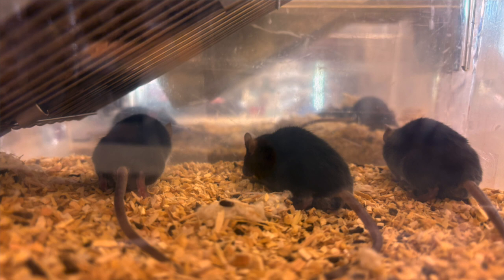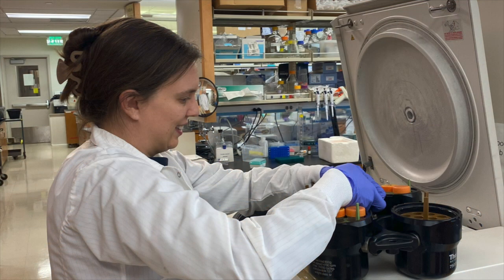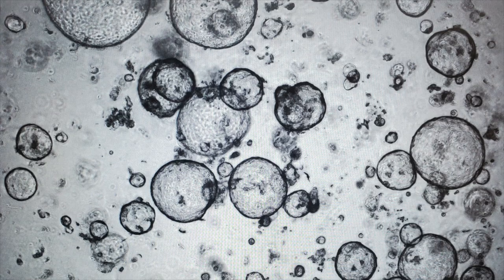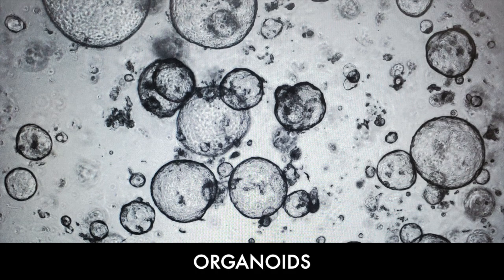To study hepatic progenitor cells specifically, I'm using a specialized method of growing cells. We isolate cells directly from mouse liver and culture them in three dimensions, and they form hollow spheres. These spheres are called organoids and we know that they're a good model for studying hepatic progenitor cells.